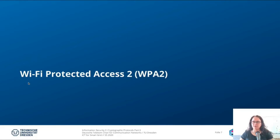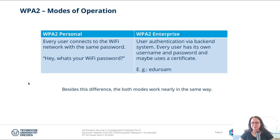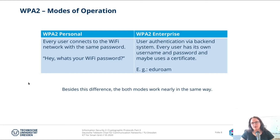WPA2 comes in two modes of operation: WPA2 Personal and WPA2 Enterprise. WPA2 Personal is what most of you will know — every user that wants to connect to the Wi-Fi network has to provide a password. WPA2 Enterprise uses user authentication via a back-end system with a user management system where every user has their own username and password, and maybe they use some sort of certificate. An example you might know is eduroam or the University VPN.